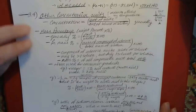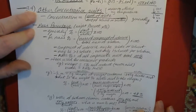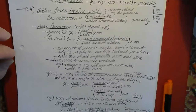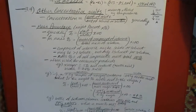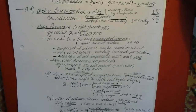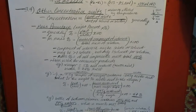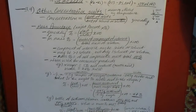Moving on, we need to go over a few other units of concentration. These units won't be used nearly as often as molarity in general chemistry, but we do need to be aware of them and what they mean. For instance, the first one we're going to go over — mass percentage — is not used in chemistry all that often, but it is used quite often for consumer products, so it's good to have an idea what it means.